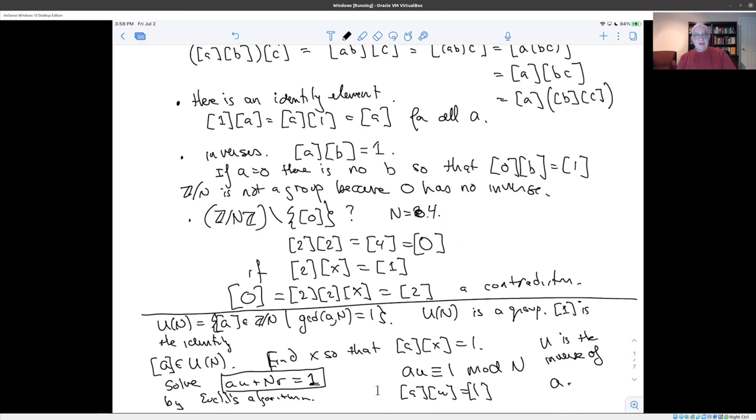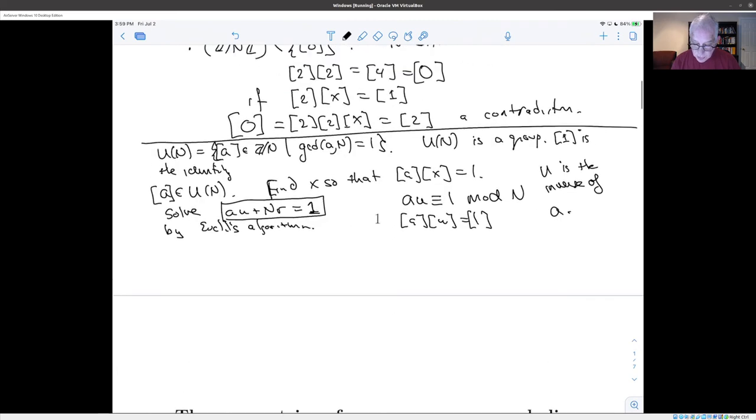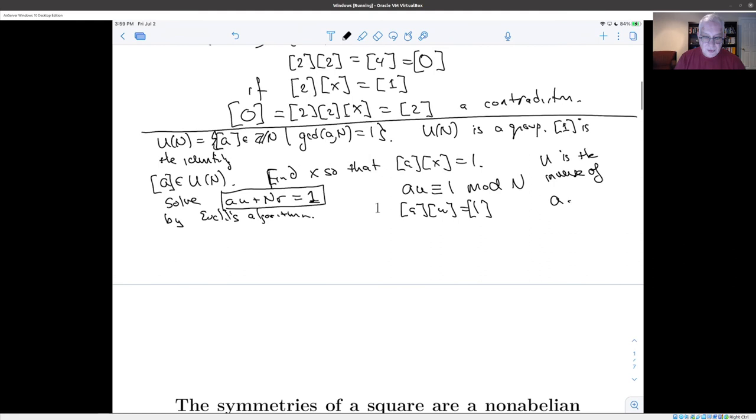And this tells us that if we restrict ourselves to the group u(n), then we're going to get a group under multiplication. And just to maybe look at the example of Z mod 4, we have to take the congruence classes. There are four of them: zero, one, two, and three. But we have to throw away the ones where there's a factor in common with four. So we have to throw away zero and two. So u(n) has the elements one and three in it. And the multiplication table is: one is the identity element. One times one is one, one times three is three, three times one is three, and three times three is nine, but nine is one mod 4.